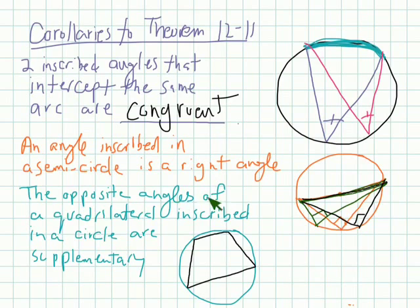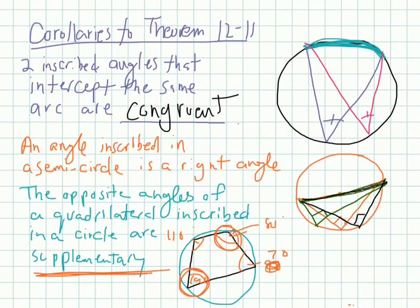And lastly, the opposite angles of a quadrilateral inscribed are supplementary. Do you remember what supplementary means? So opposite could be here and here. And what this says is that this angle and this angle are supplementary, meaning they'll add to be 180 degrees. So if this was 100, then this one would be 80, because I know that they're supplementary. If this one was 70, this angle would be 110, because they're supplementary. They need to add to 180 degrees.